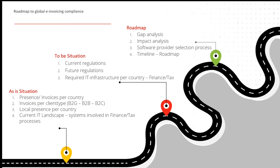You need to discover who your clients are — business, governmental, or consumer. In most countries, if you have a local presence, you must comply with local invoicing regulations. Also consider whether you send invoices centrally or from within a country. Your current IT landscape matters too: which systems are involved in your ERP, finance, invoicing, and order-to-cash process? In step two, the to-be situation, you check current regulations, prioritize countries, and compare your as-is versus to-be to identify the gap.